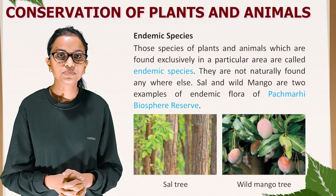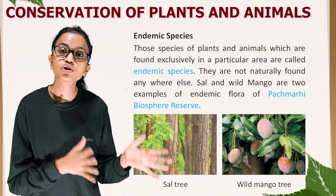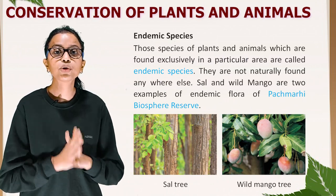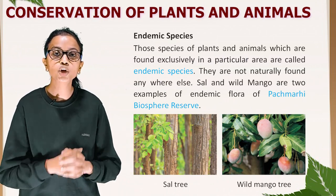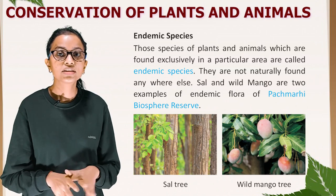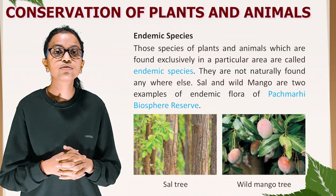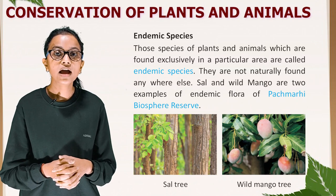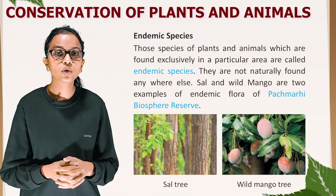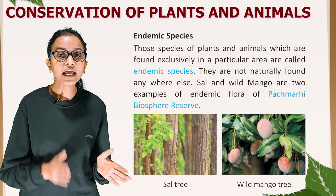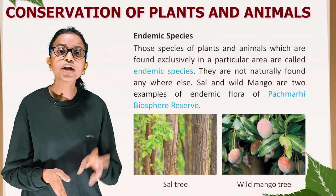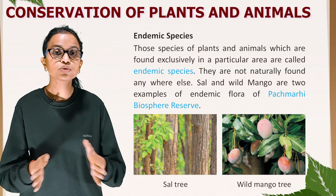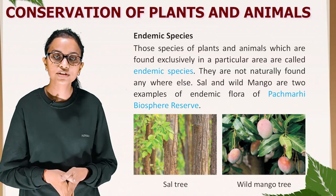Endemic species: those species of plants and animals which are found exclusively in a particular area are called endemic species — they are not naturally found anywhere else. Sal and wild mango are two examples of endemic flora of Pachmarhi Biosphere Reserve.